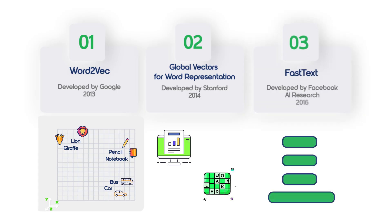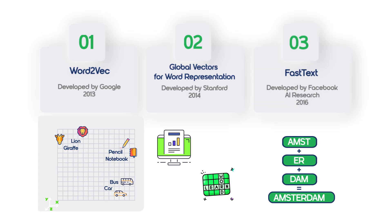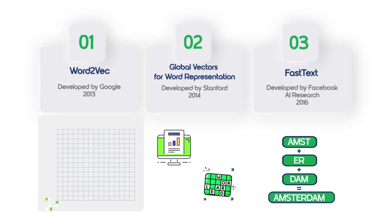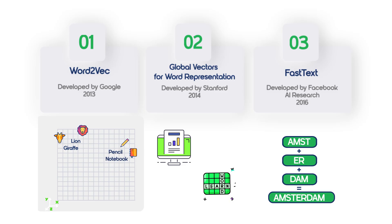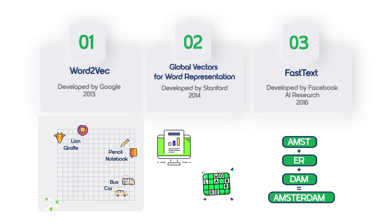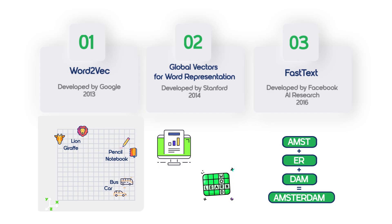The third method is FastText, developed by Facebook AI Research and introduced in 2016. It represents words through subword components, improving performance with rare or unknown words.